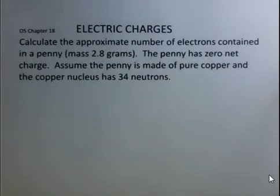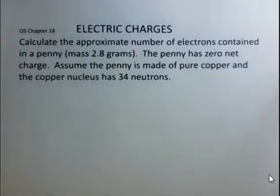We're going to calculate the number of electrons in a penny, a one-cent coin in the United States. This penny has a mass of 2.8 grams. It's electrically neutral and it's pure copper. We'll ignore any alloy effect.